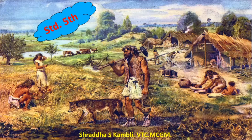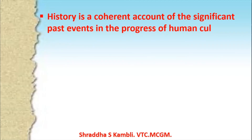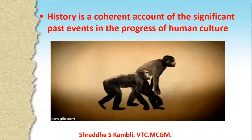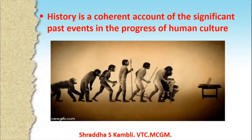Before we go to the syllabus of sixth standard, let us take a look at what we learnt in standard fifth. In standard fifth you did not have history and geography — you had EBS 1 and EBS 2. In EBS 2 we learnt about how man progressed — how man was in the beginning and later on how his life changed. We learnt that history is an account of past events, and we learnt how human beings developed from being almost animals to the way we are now. This picture will tell you how we developed — this is what we learnt in history last year.